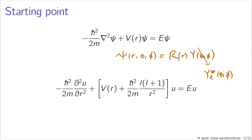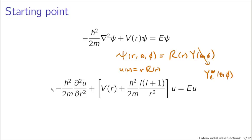The radial part was a little more complicated, since that's where the bulk of the interesting derivatives are in the Laplacian. If we make the substitution u = r · R(r), we ended up with the radial equation as a result of separation of variables. You can see this in the previous lecture on the time-independent Schrödinger equation expressed in three dimensions.